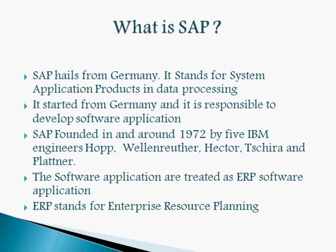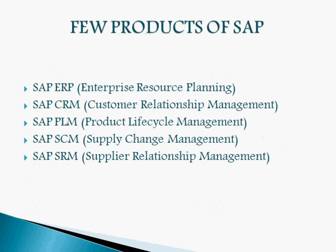The main competitor of SAP is Oracle. SAP has several products: SAP ERP (Enterprise Resource Planning), SAP CRM (Customer Relationship Management), SAP PLM (Product Lifecycle Management), SAP SCM (Supply Chain Management), SAP SRM (Supplier Relationship Management), and the legacy products R1 and R2.